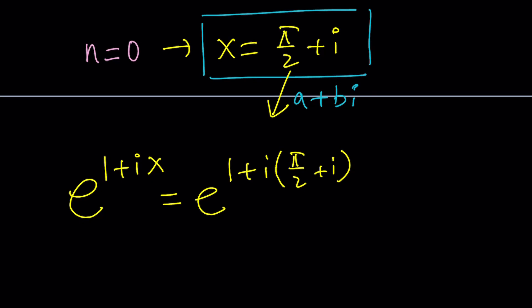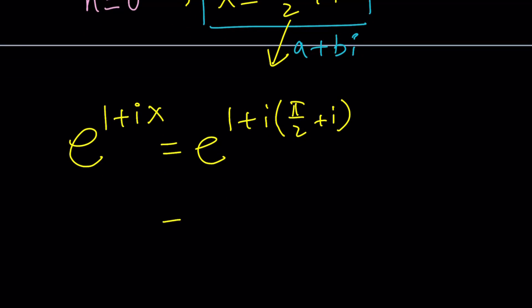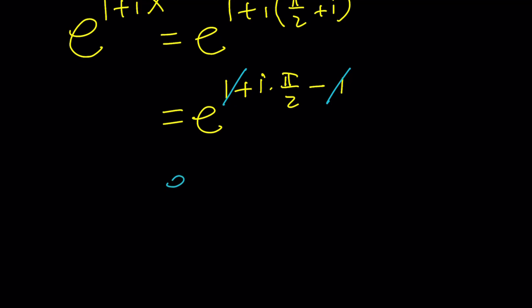And then what we're going to do, we're going to distribute. Use the distributive property. 1 plus i times pi over 2. And then i times i is just going to be i squared. So, you're going to write it as plus i squared or just minus 1. Aha. Isn't that great? 1 cancels out. Beautiful. And when 1 cancels out, we end up with e to the power i times pi over 2.